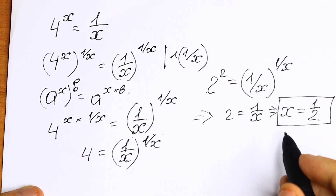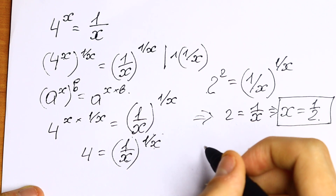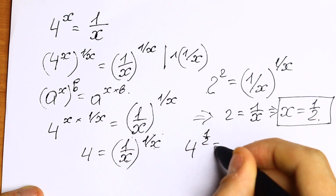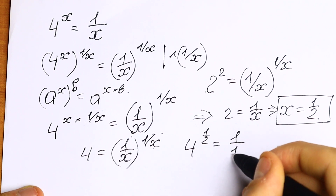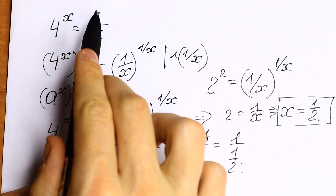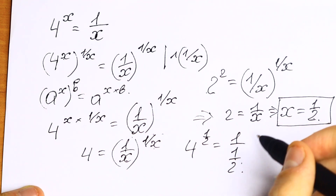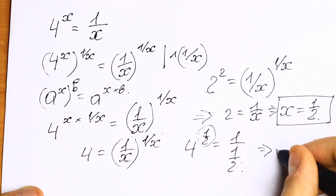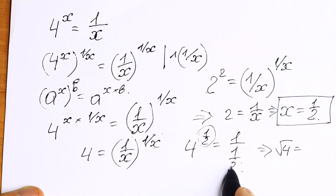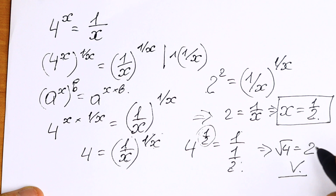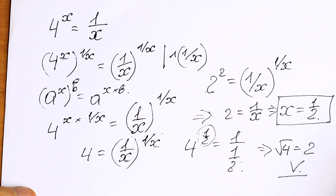Let's check this root — maybe it's incorrect. We will have 4 to the power 1 half equal to 1 over 1 over 2. Plug in 1 half: 4 to the power 1 half is the square root of 4, and 1 over 1 over 2 equals 2. So square root of 4 equals 2, which is correct. Our root is good.